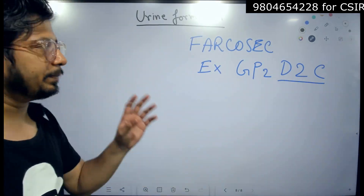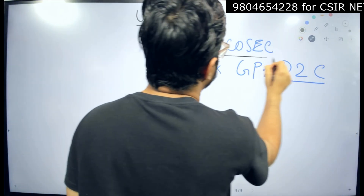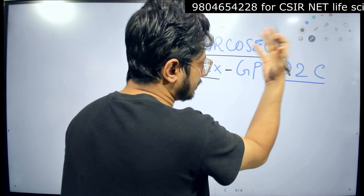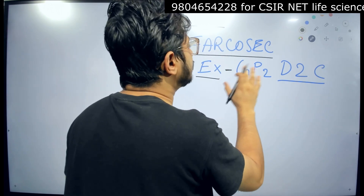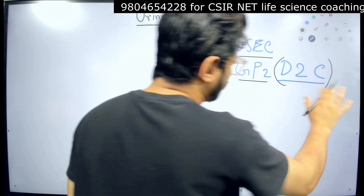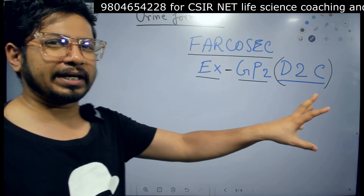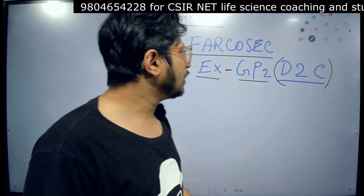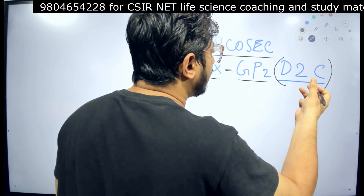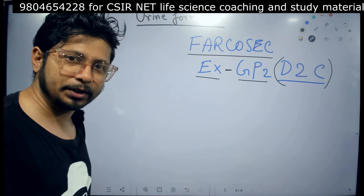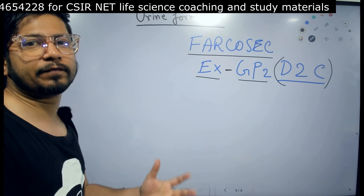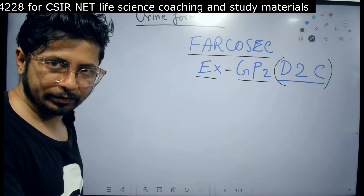But still, if you remember this FAR-COSEC — this particular mnemonic FAR-COSEC — and an example of that, we have GP2, a glycoprotein type 2, just remember this. And then D2C is direct-to-consumer kind of business. So this is what you can remember and relate to: FAR-COSEC, then example GP2, D2C. If you remember that, you can understand the steps of urine formation by the nephron and the portion and segment of nephron involved in the process.